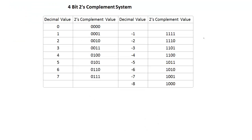Here are all of the values in a 4-bit 2's complement system. With 4 bits you can represent 16 different values, from 0000 up to 1111. For an unsigned number system, you can represent 0 up to 15. For a signed 2's complement number system, we can represent negative 8 all the way up to positive 7. A couple things to note: all positive numbers start with bit 0, and all negative numbers start with bit 1. Also, the binary representation of negative 1 is determined by taking the 2's complement of positive 1.